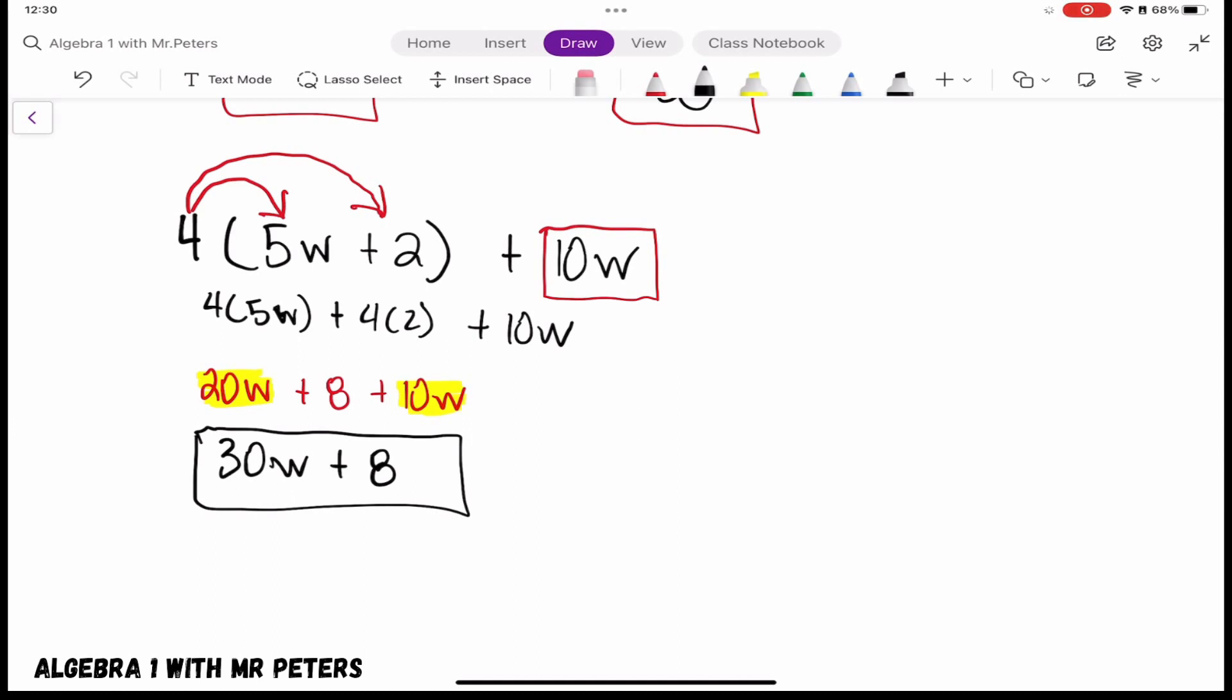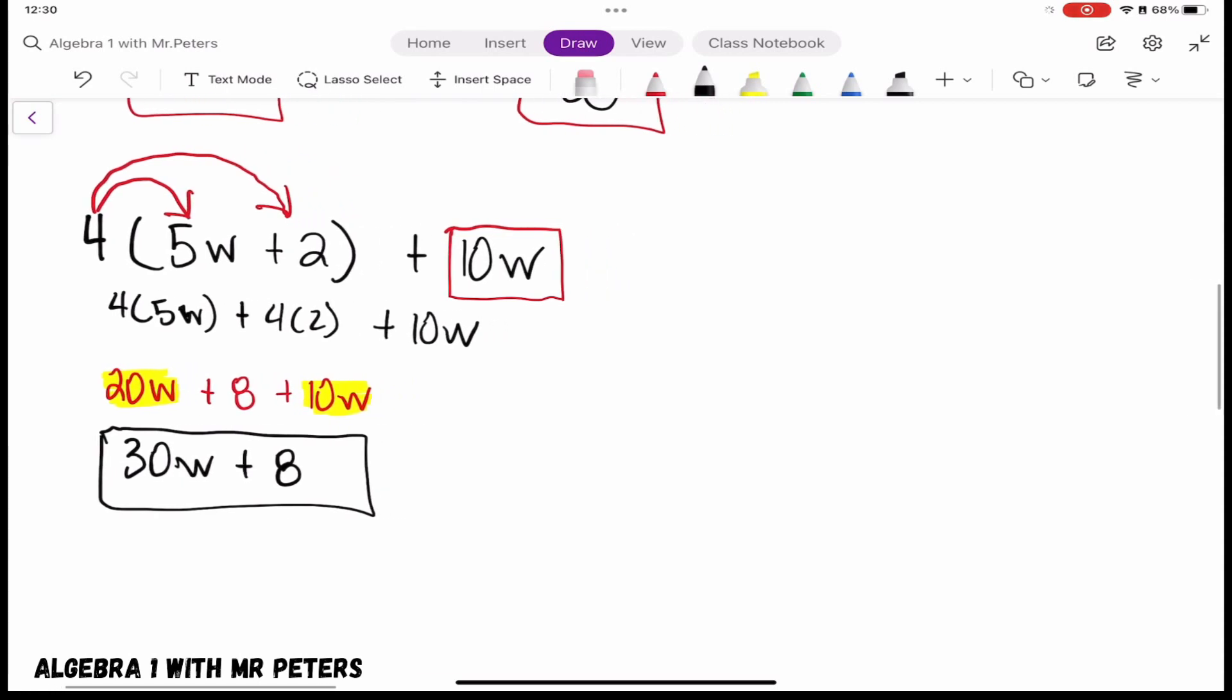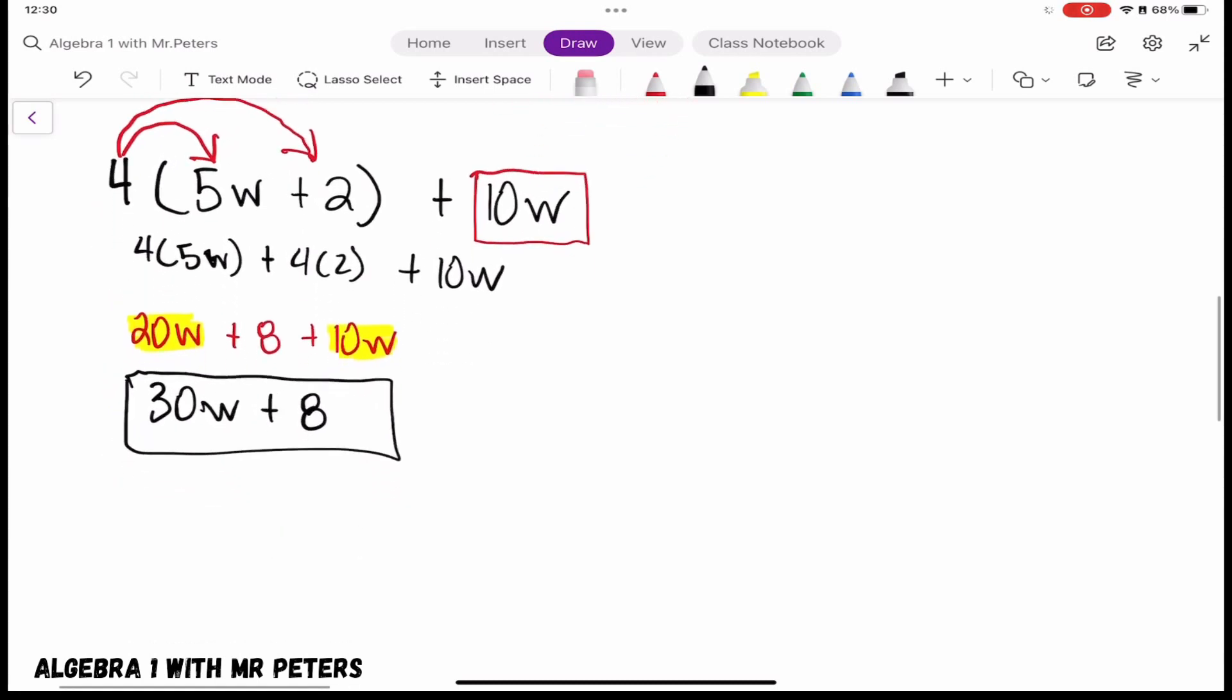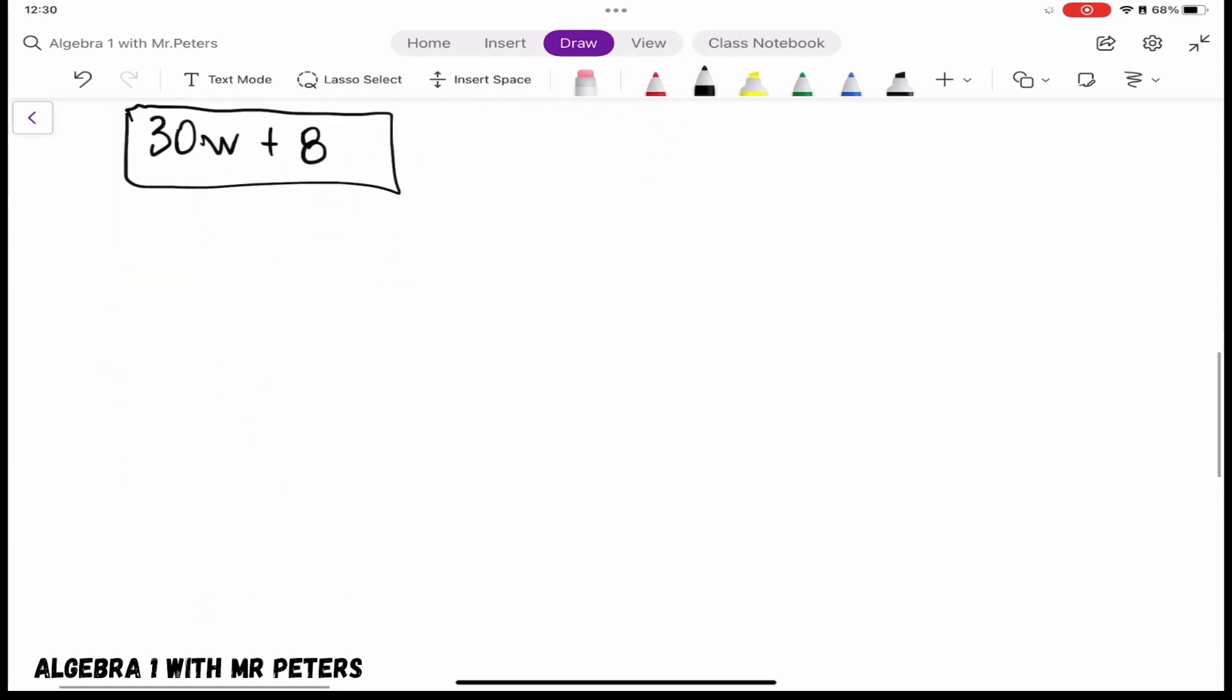Okay, so this is what we're talking about with distributing and combining like terms. Let's try a different example. Let's say we had a problem where there are more than two terms inside of parentheses and we have like terms.